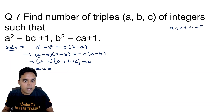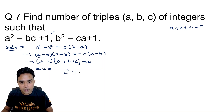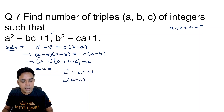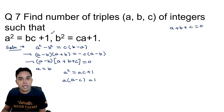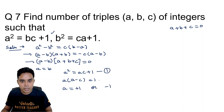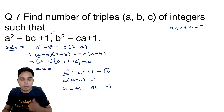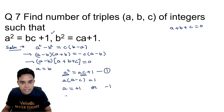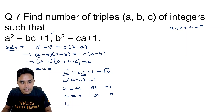Case 1: a equals b. Substituting into the first equation: a² = ac+1, so a(a−c) = 1. Since a and a−c are integers with product 1, either a=1 (giving c=0) or a=−1 (giving c=0). The triples are (1,1,0) and (−1,−1,0). These can be verified in both equations.